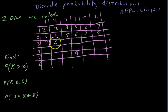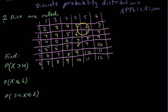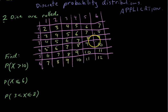Now let's fill out that table. I got halfway through and realized I made a mistake — 2 plus 3 is 5, not 6. Now there's our sample space: all 36 things that can happen.